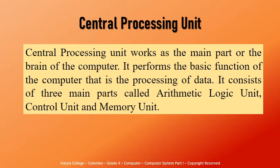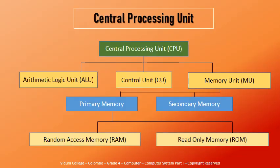The central processing unit is the brain of the computer. It is the most important part of a computer and performs the basic function of the computer, that is the processing of data. It consists of three main parts: the arithmetic and logic unit, shortened form ALU. This is the illustration of the central processing unit. The CPU is divided into three parts: the arithmetic logic unit, the control unit, and the memory unit.